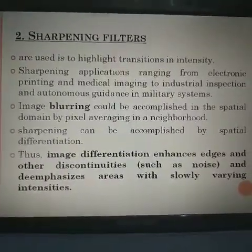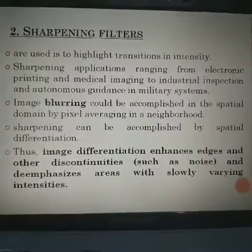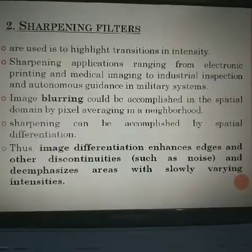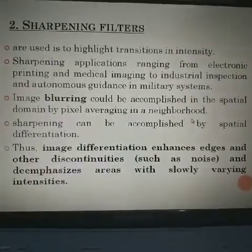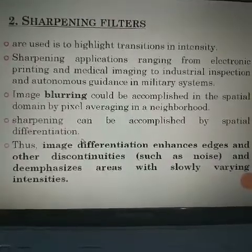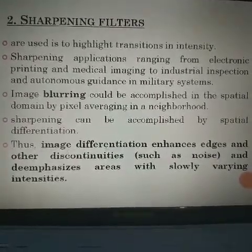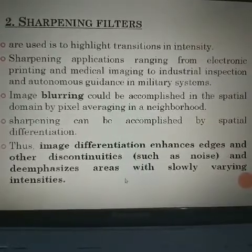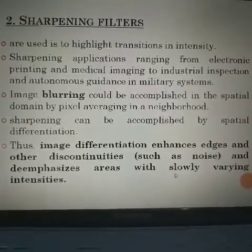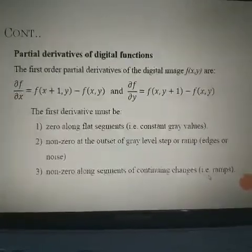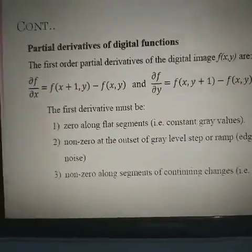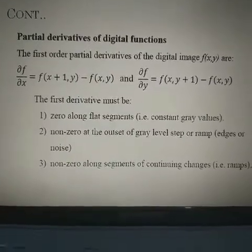Noise reduction and blurring are applied through the differentiation process. Image blurring can be accomplished in the spatial domain by pixel averaging in the neighborhood, and sharpening can be accomplished by spatial differentiation. Image differentiation enhances edges and other discontinuities such as noise, and de-emphasizes areas with slowly varying intensity.